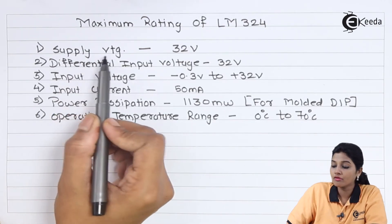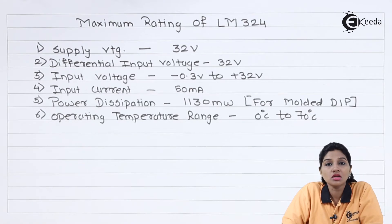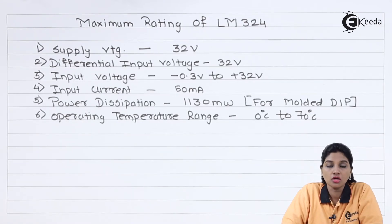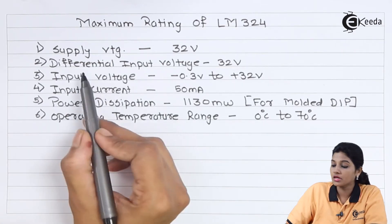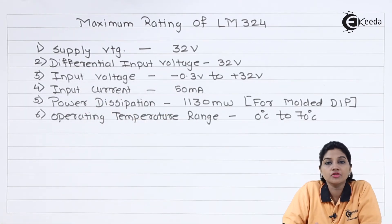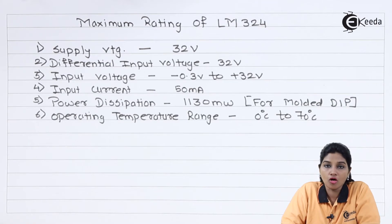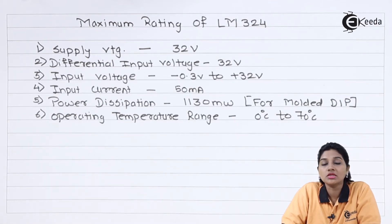The first supply voltage rating is maximum single power supply that can be used by LM324 is 32V. The second rating is the differential input voltage. When input is applied between inverting and non-inverting terminal of the op-amp, the output of op-amp is the difference between two inputs.